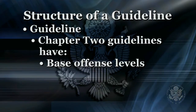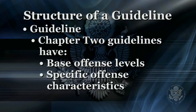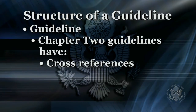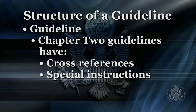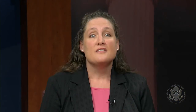For example, the base offense level for robbery is 20. Specific offense characteristics are additional factors provided in each guideline that provide increases, or in some cases decreases, to that initial base offense level. Cross-references may direct the court to apply another guideline section if a particular factor is present in the defendant's conduct in the instant offense of conviction. Special instructions are just what they sound like — special instructions guiding the court on application of a particular guideline. The overwhelming majority of Chapter 2 guidelines include specific offense characteristics; some include cross-references, and very few include special instructions.